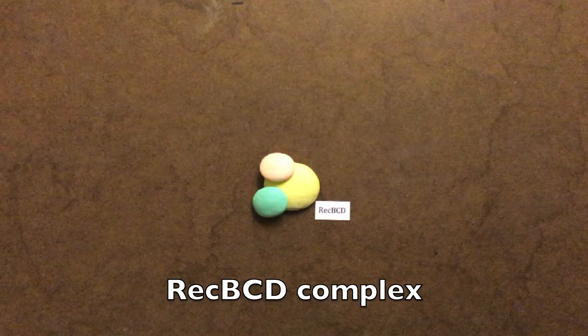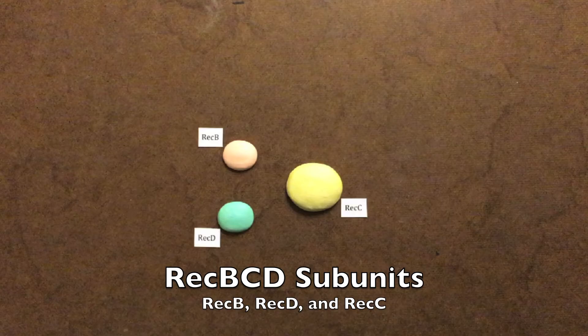RecBCD is an enzyme that contains both DNA helicase and nuclease activities to unwind and degrade the double-stranded DNA to generate single-stranded DNA. The complex uses the energy from ATP hydrolysis to process the activities and it is controlled by specific short DNA sequences called chi-sites. It is composed of three subunits: RecB, RecC, and RecD.